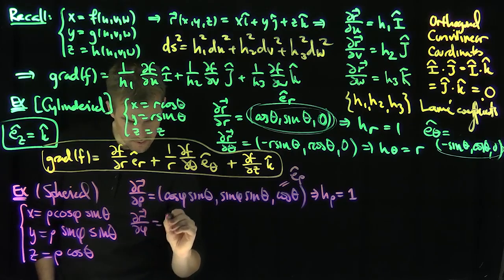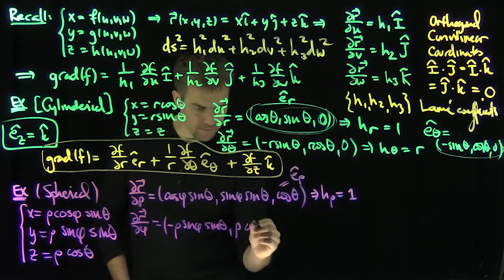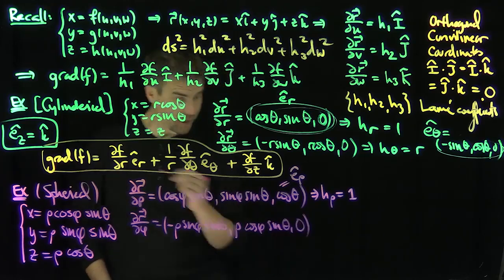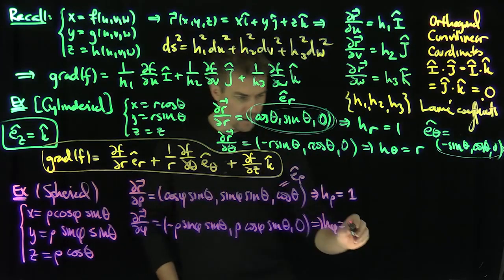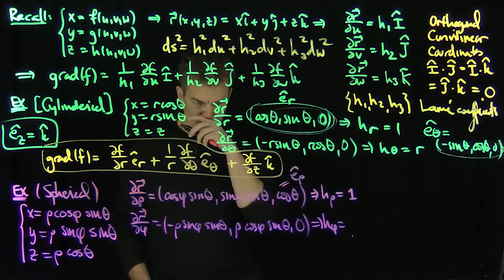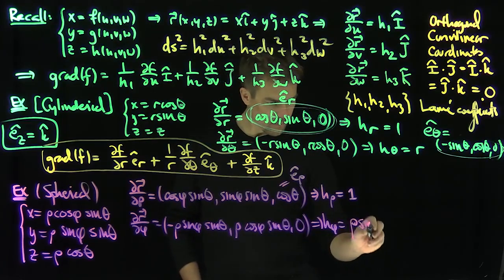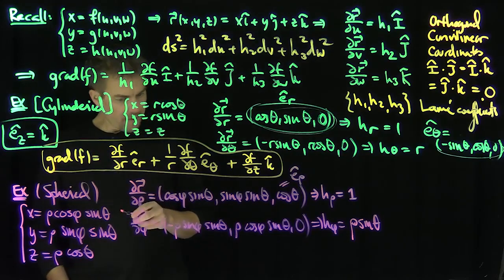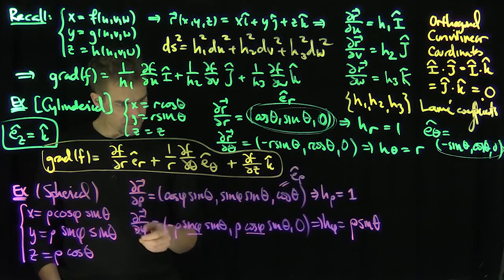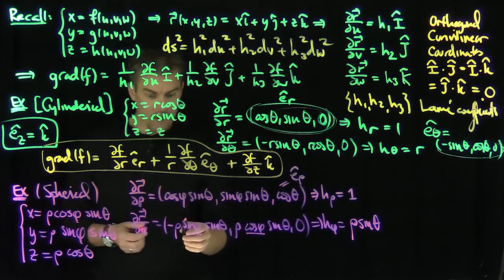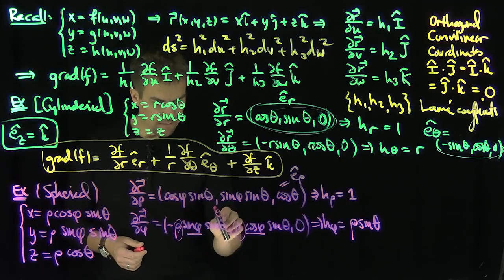Now let's do partial r partial φ. That's (−ρ sin φ sin θ, ρ cos φ sin θ, 0). So h_φ is the length of this vector. We have this squared plus this squared under the square root, which gives ρ sin θ. So h_φ equals ρ sin θ. The resulting unit vector, dividing out the ρ sin θ, I call e_φ-hat.